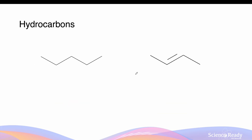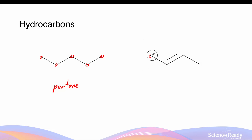We can now practice naming our organic compounds. On the left, we have 5 carbons with no indicator bonds. Since there are no indicator bonds, this must be pentane. On the right hand side, we have 1, 2, 3, 4 carbons. At carbon number 2 there is a double bond, indicating the alkene functional group. Thus, with 4 carbons and the double bond at carbon number 2, we call this but-2-ene.